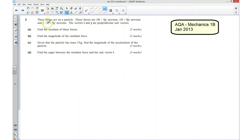The three forces act on a particle, these forces are 9I take away 3J Newtons, 5I plus 8J Newtons and minus 7I plus 3J Newtons. And we want to find the resultant of these forces. So part A, this should be nice and straightforward because we're just trying to find the resultant of the forces, that's just the sum of the forces. So I'm going to write these in column vector form because I've got terrible handwriting as you've probably noticed.